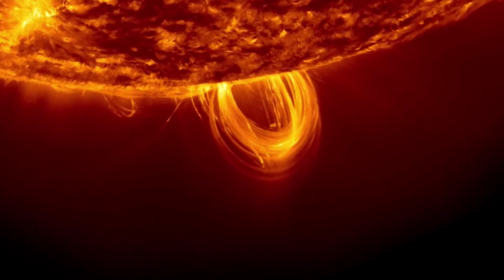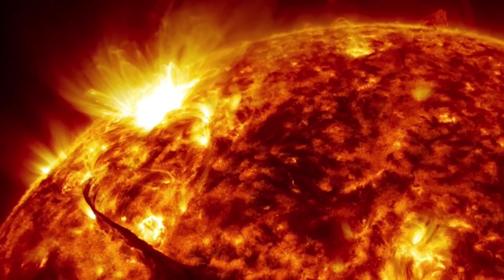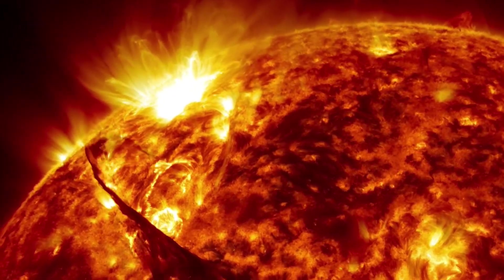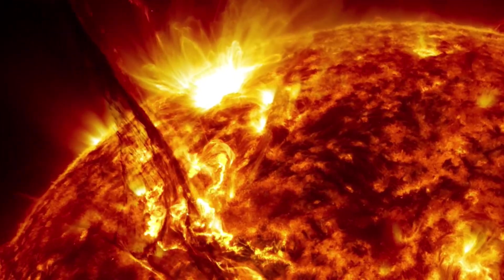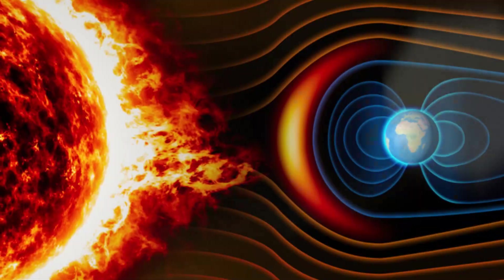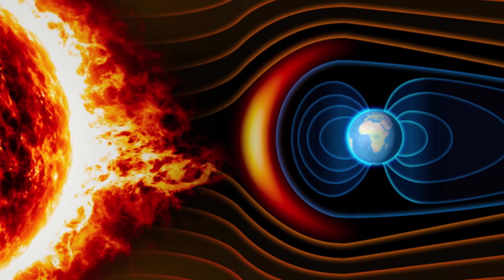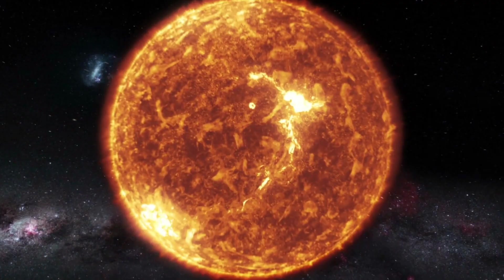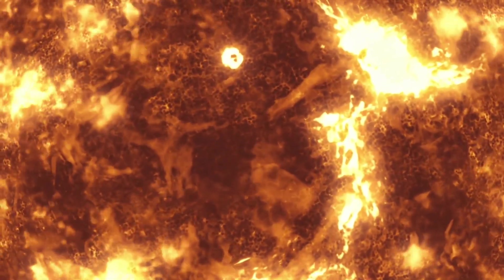Solar flares arise when there is an accumulation of energy in magnetic fields that seeks equilibrium. These fields aim to dissipate this energy, but they are constrained. This process results in the transference of energy from the magnetic fields to the heating of plasma,